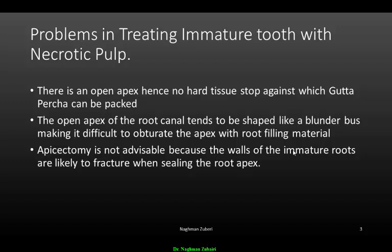The open apex of the root canal tends to be shaped like a blunderbuss, making it difficult to obturate with root filling material. Apicoectomy is not advisable here because the root would probably be too small. Additionally, the walls of immature roots are liable to fracture when condensing retrograde filling material, and the dentine is so thin that roots may fracture while obturating the canal.